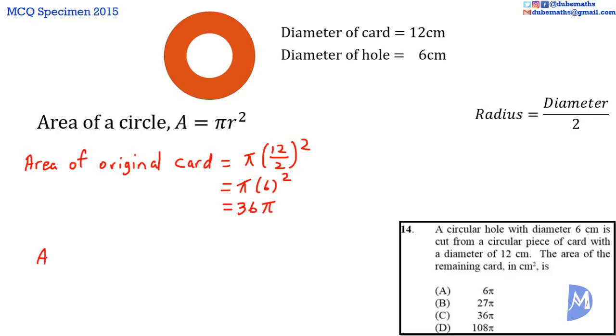The area of the hole is equal to pi times 6 over 2 squared. It is equal to pi by 3 squared. 9 pi.